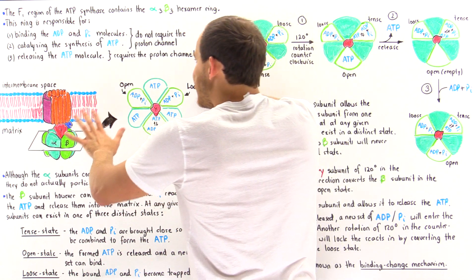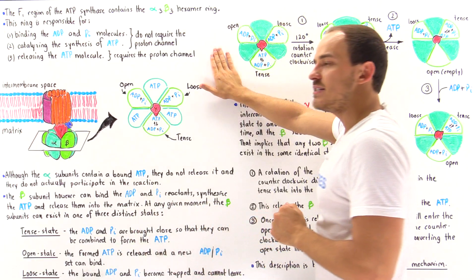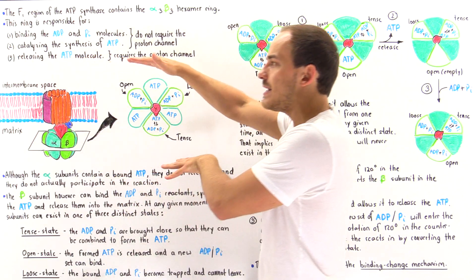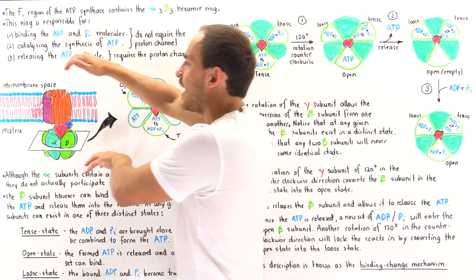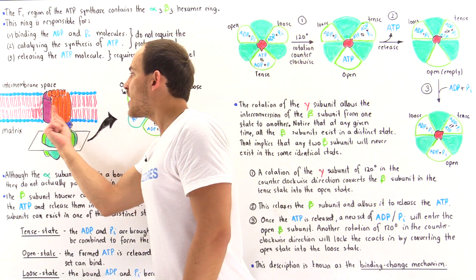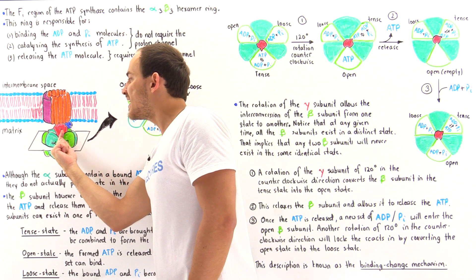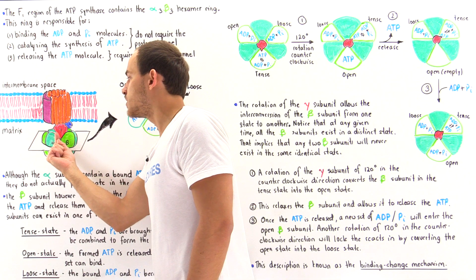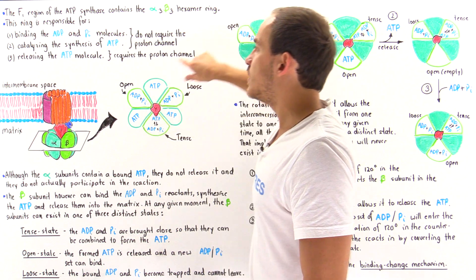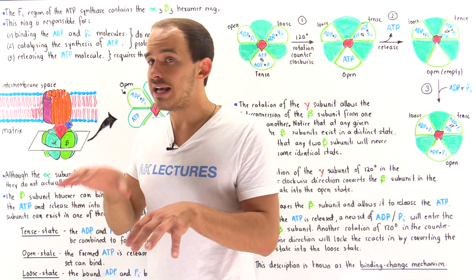However, for ATP synthase to actually release the synthesized ATP molecule, there must be a proton electrochemical gradient between the two sides of the inner membrane. Only when the F0 structure rotates — when the C ring rotates — will the gamma structure rotate, and only then will ATP be released. We'll discuss this in more detail in the next lecture.